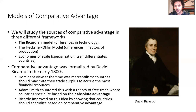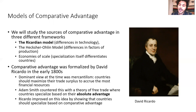Adam Smith argued countries should specialize based on what they're absolutely more productive in. David Ricardo then improved this in the early 1800s by showing it's actually comparative advantage—not absolute advantage—that generates the differences in opportunity costs leading to gains from trade. Same big idea that countries are wealthy because of what they can consume, but it's a refinement of the sources of the gains from trade.